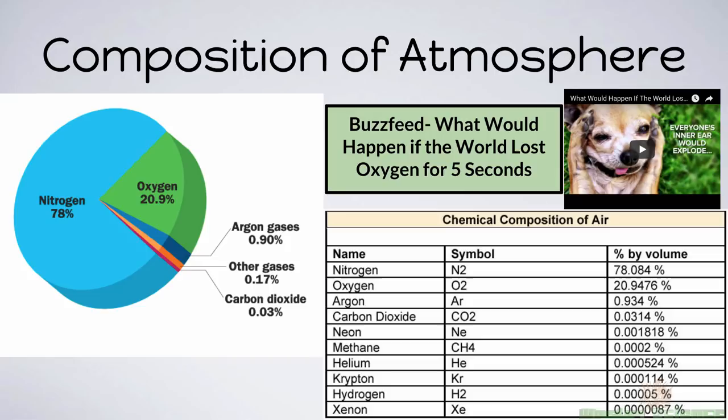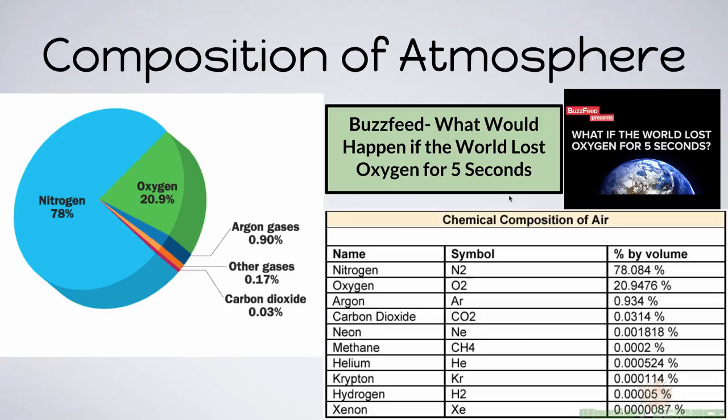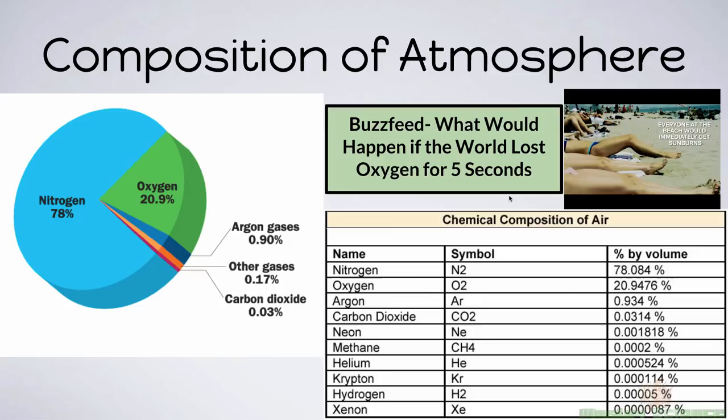The composition of the atmosphere is pretty simple. The majority is nitrogen at 78%, and then about 20.9% is oxygen. A very small portion is argon, which is a noble gas, and then you've got other gases like carbon dioxide. You can see what those other gases are in the table. There's a cool BuzzFeed video on what would happen if oxygen disappeared for five seconds — I'll provide a link in the description.